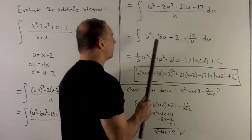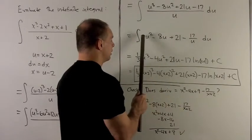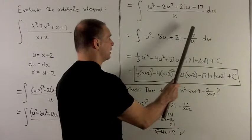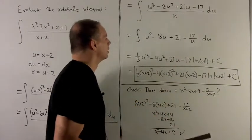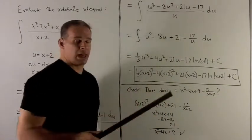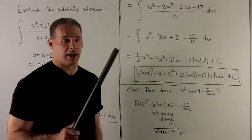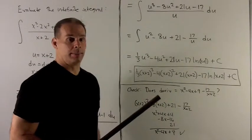I divide u into each term, and I'm left with this polynomial here, minus 17 over u. For the first three, add one, flip it over, and we multiply the 21 by u.